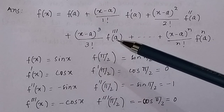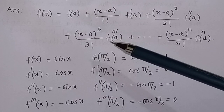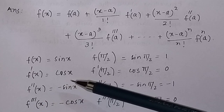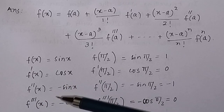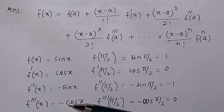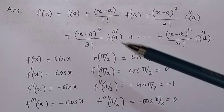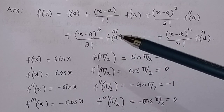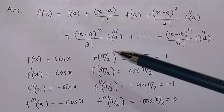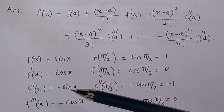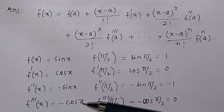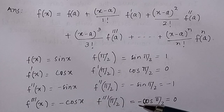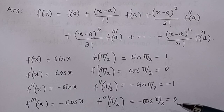Similarly, we find the third derivative. To find the third derivative, we differentiate -sin(x), so the derivative of -sin(x) = -cos(x). The third derivative at x = a is f'''(π/2) = -cos(π/2) = 0.